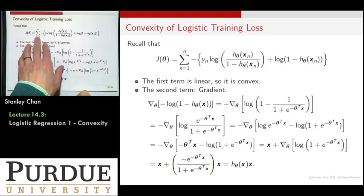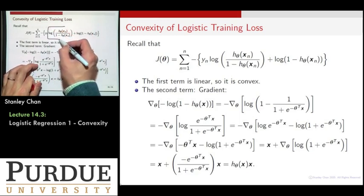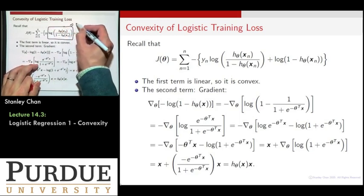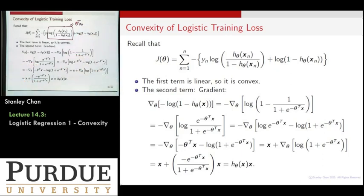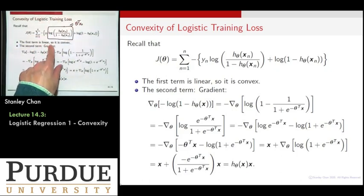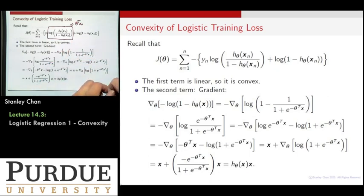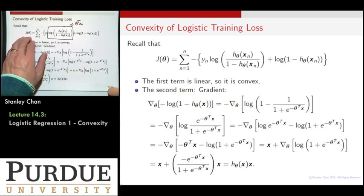This is the cross-entropy loss written in the previous form, and the immediate thing you realize is that this term is just theta transpose X_n because of the thing that we just derived. This is linear, so the first term is linear, and by definition it is convex. As long as we can prove that the second term is also convex, then we are pretty much done—we have shown that the loss function J is convex.